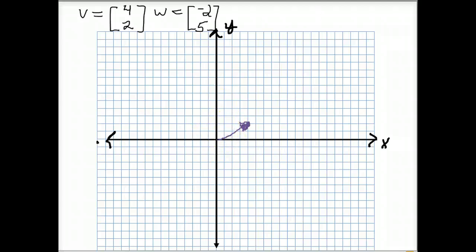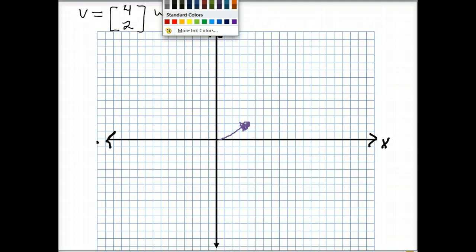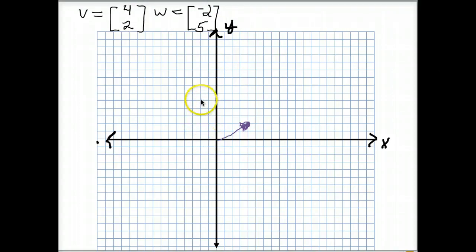Next, we'll graph vector w. w is negative 2, 5. And again, we'll give this magnitude and direction by creating an arrow.